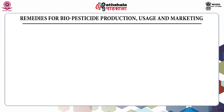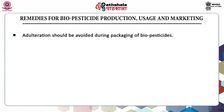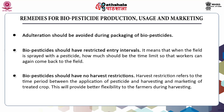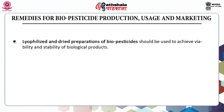Coming to the remedies for biopesticide production, usage and marketing: firstly, adulteration should be avoided during the packing of biopesticides. Biopesticides should have restricted entry intervals — meaning when the field is sprayed with the pesticide, there should be a defined time limit before workers can re-enter the field. They should have no harvest restrictions. Harvest restriction refers to the time period between application of pesticide and harvesting and marketing of treated crop, which will provide better flexibility to farmers during harvesting. Lyophilized and dried preparations of biopesticides should be used to achieve viability and stability of biological products.